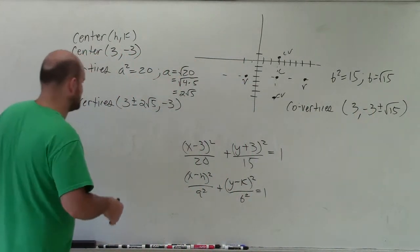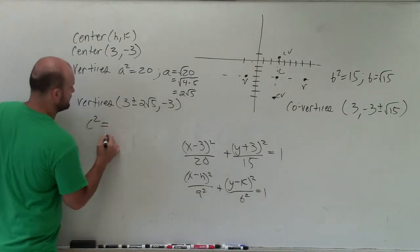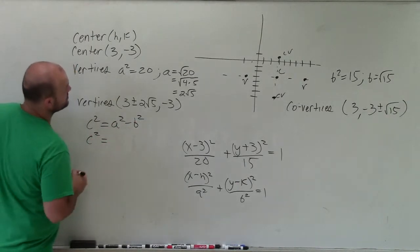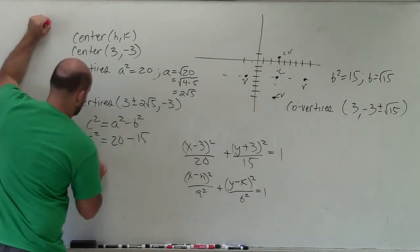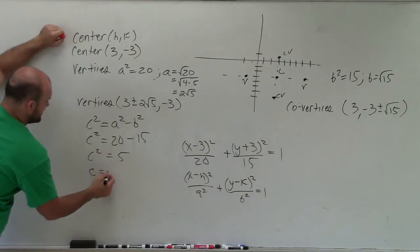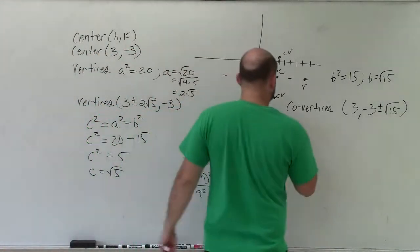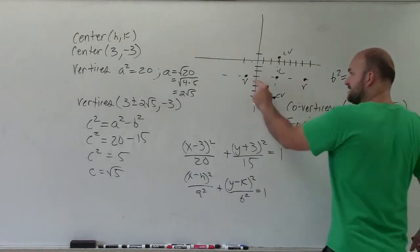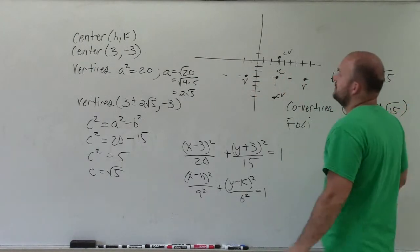The last one is going to be the foci. Now, to find the foci, we've got to know c squared. And the relationship we have for c squared is equal to a squared minus b squared for ellipses. So c squared equals 20 minus 15. c squared is equal to 5. So therefore, c is equal to the square root of 5. Take the square root of both sides. So to find the foci, remember, the foci is on the major axis. It's on the same axis as the vertex center and the other vertex. So therefore, I'm going to be adding left and right from the center, just like I did with the vertices.